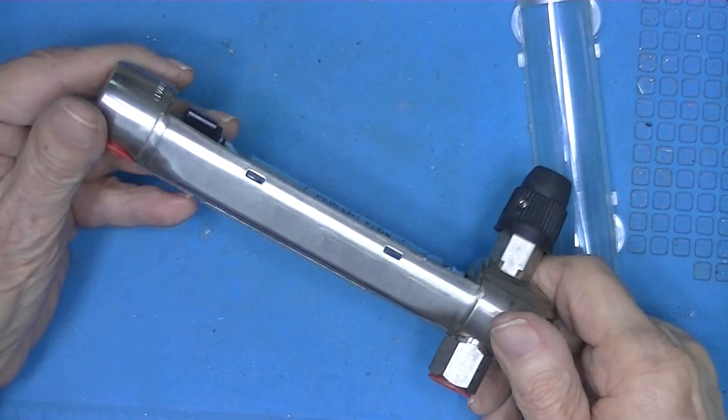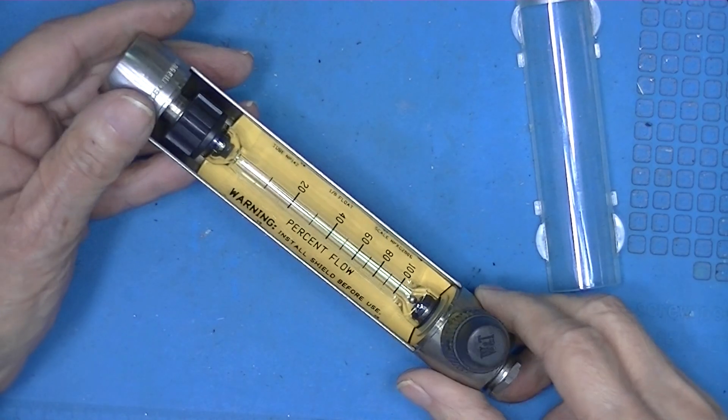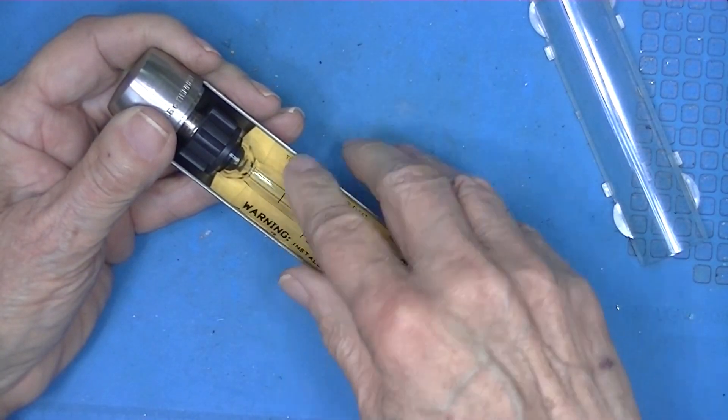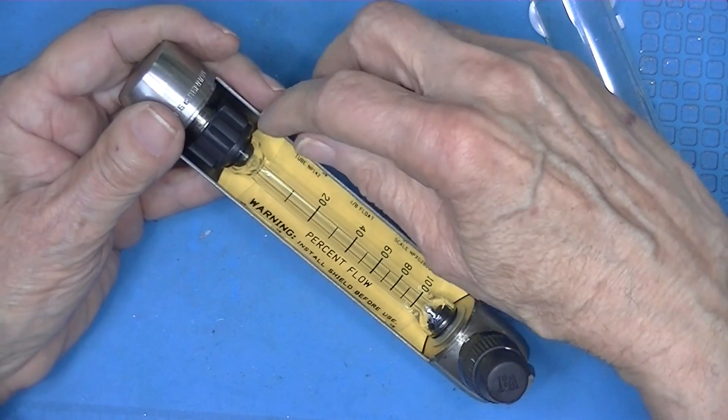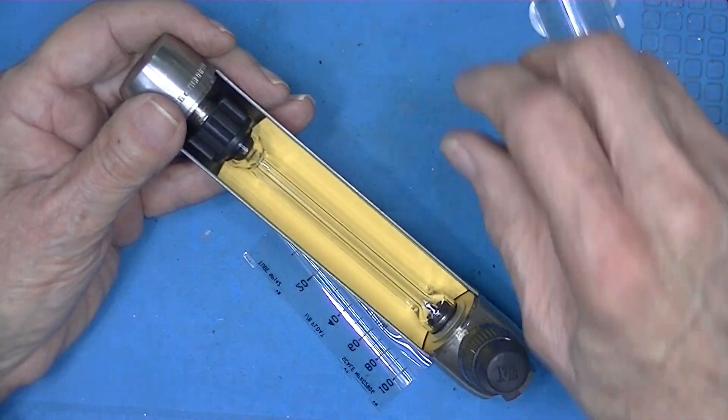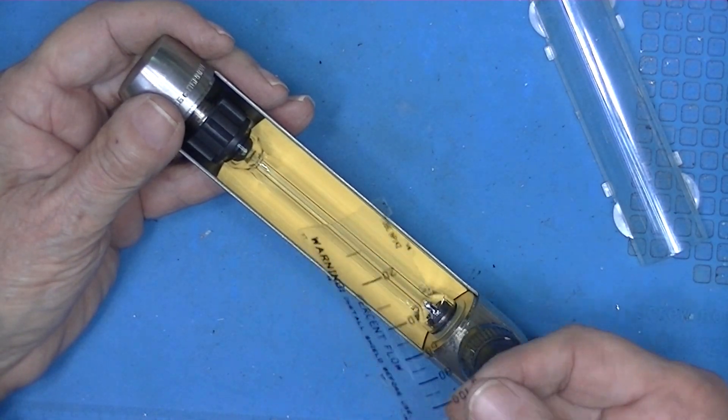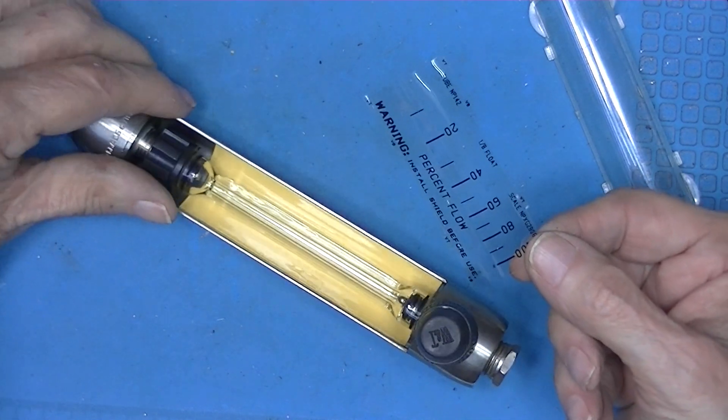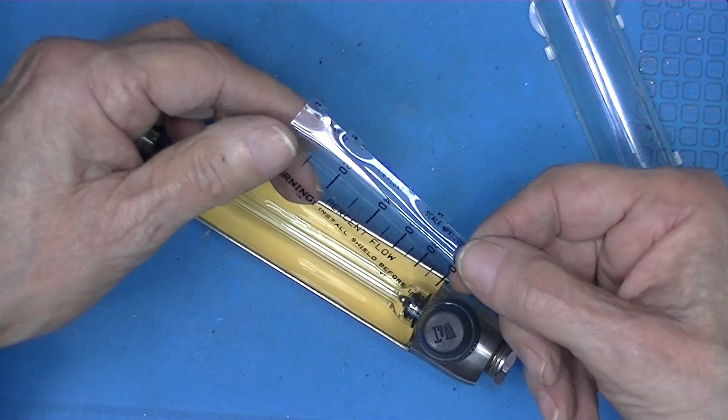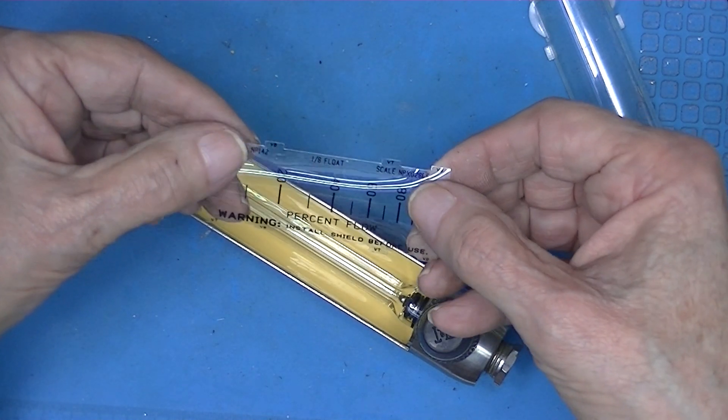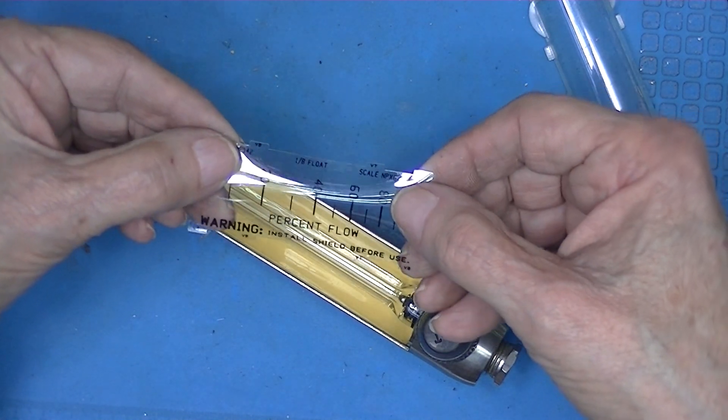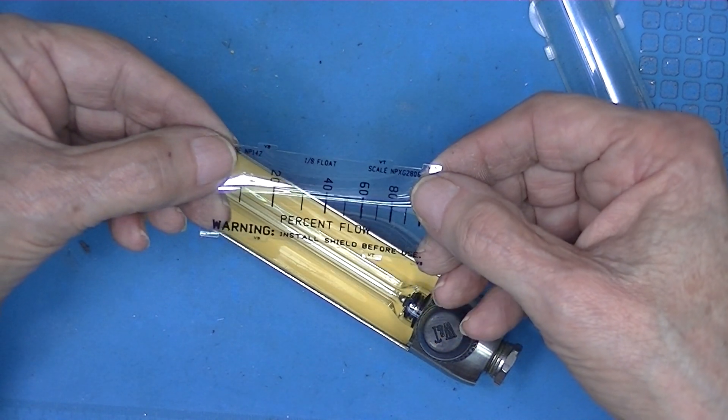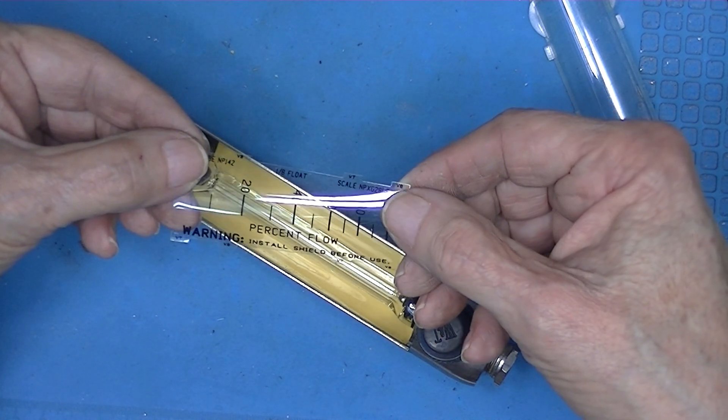This is a Wallace and Tiernan unit. You can see Wallace and Tiernan there. It's got a glass tube, it's got a plastic shield. The tube itself is not graduated. The plastic scale is calibrated in percent, which is a worthless number. And a warning says install shield before using.